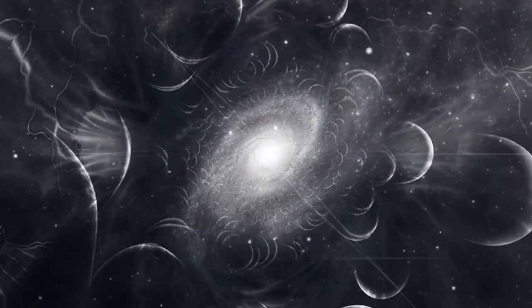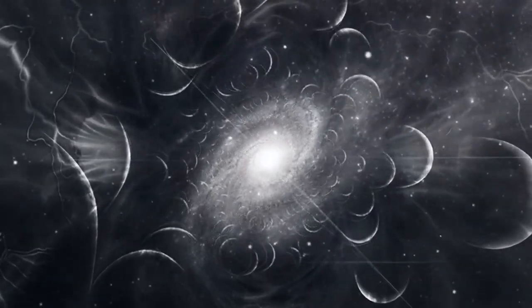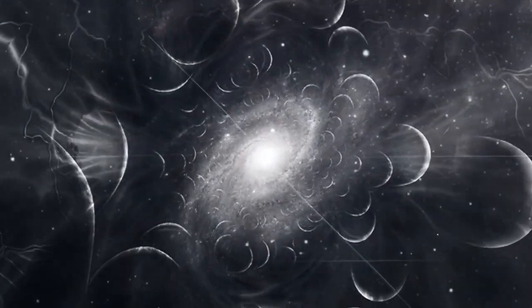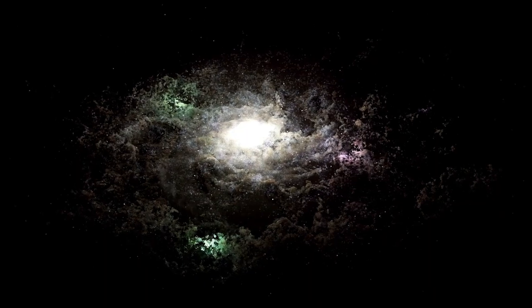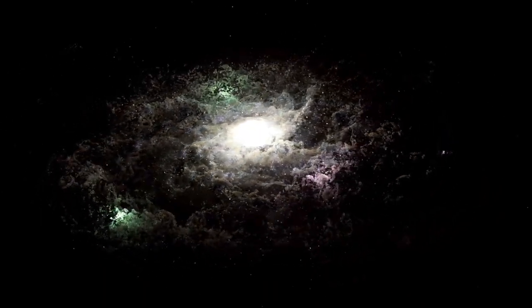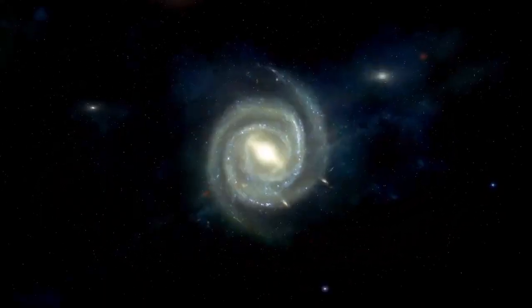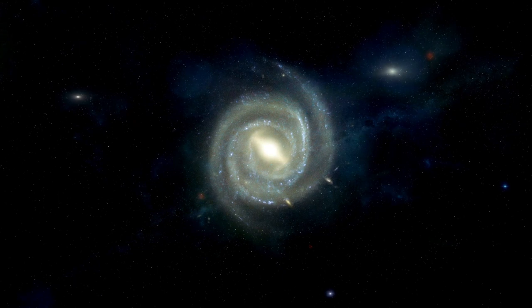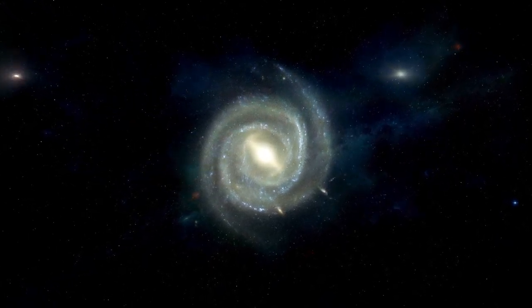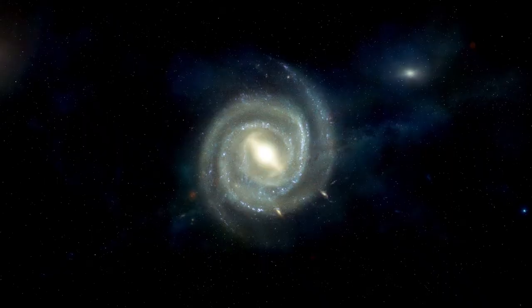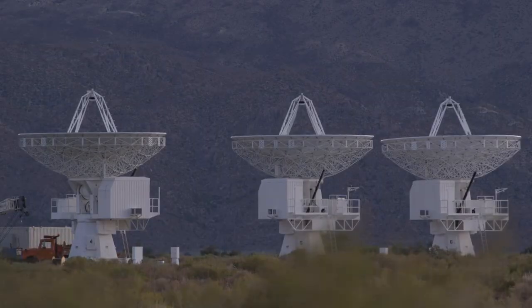NASA recently announced that the James Webb Space Telescope has made contact with distant regions of the observable universe that we had never seen before. These areas are located extremely far away, so far that their light began traveling toward us nearly 13.8 billion years ago, just after the Big Bang occurred. By capturing light from these regions, the telescope allows us to observe galaxies as they were during the earliest stages of the universe's development.